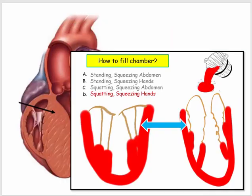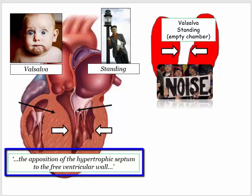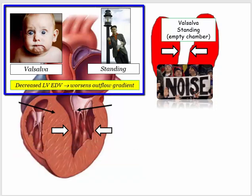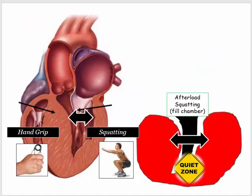We discussed physical exam maneuvers in our mitral valve prolapse video, but in the case of hypertrophic cardiomyopathy, the same maneuvers are employed with the same effect on left ventricular volume. Here our focus is on the apposition of the hypertrophic septum to the ventricular free wall. When the patient performs the Valsalva maneuver or simply stands, the left ventricular end-diastolic volume is decreased. A decreased chamber size brings the walls into closer proximity, increasing the intensity of the murmur — these maneuvers worsen the outflow gradient.